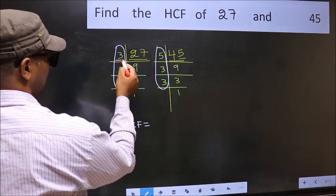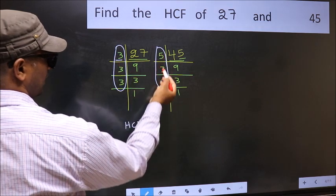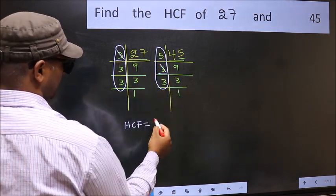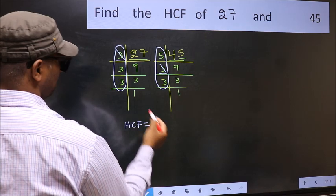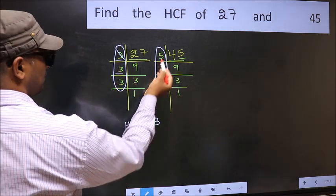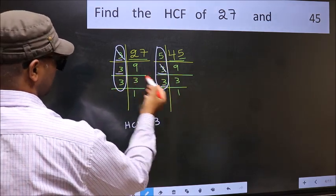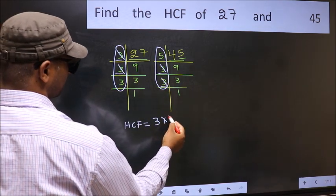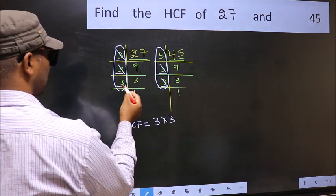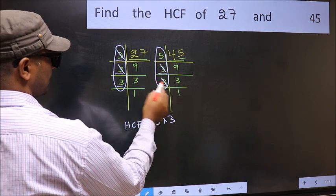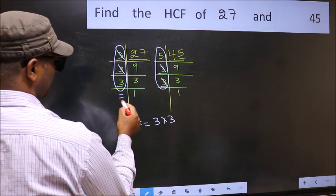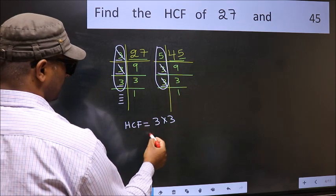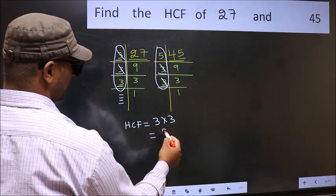Starting with the number 3 — do we have 3 here? Yes. So cut 3 right here. Next number 3 — do we have 3 here? Yes. So cut 3 right here. Next number 3 — do we have 3 here? No. No more numbers have been left out. So our HCF is 3 into 3.